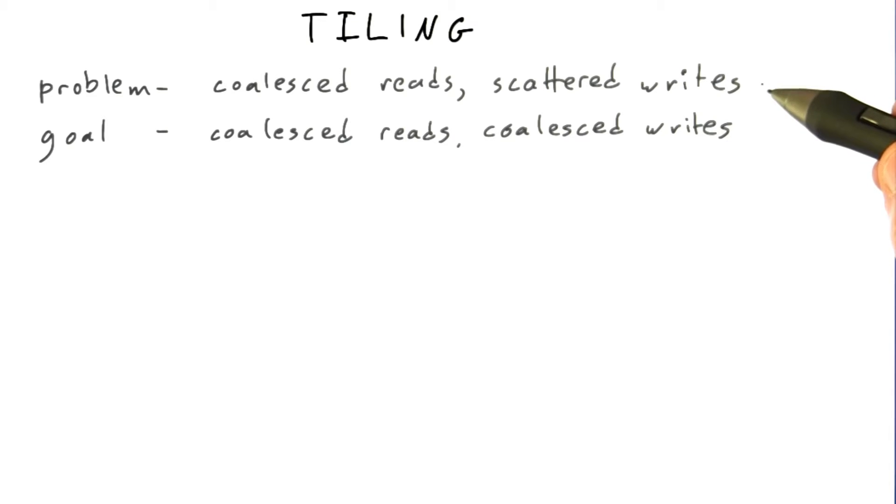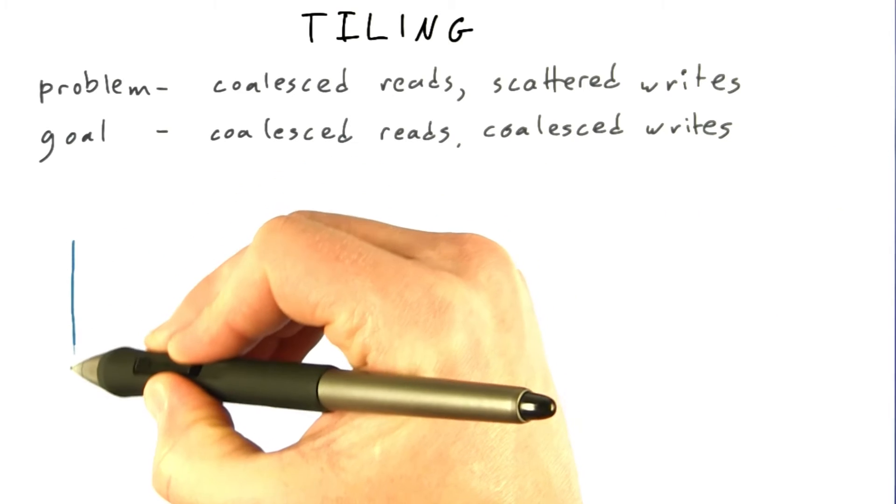Clearly swapping the order of reads and writes wouldn't help because then we'd simply have scattered reads and coalesced writes. So how do we achieve both?